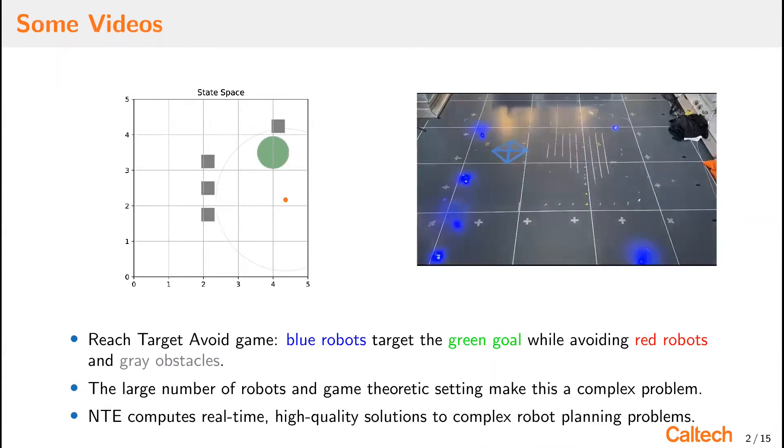In this game, blue robots try to reach the green goal while avoiding the red robots and the gray obstacles.